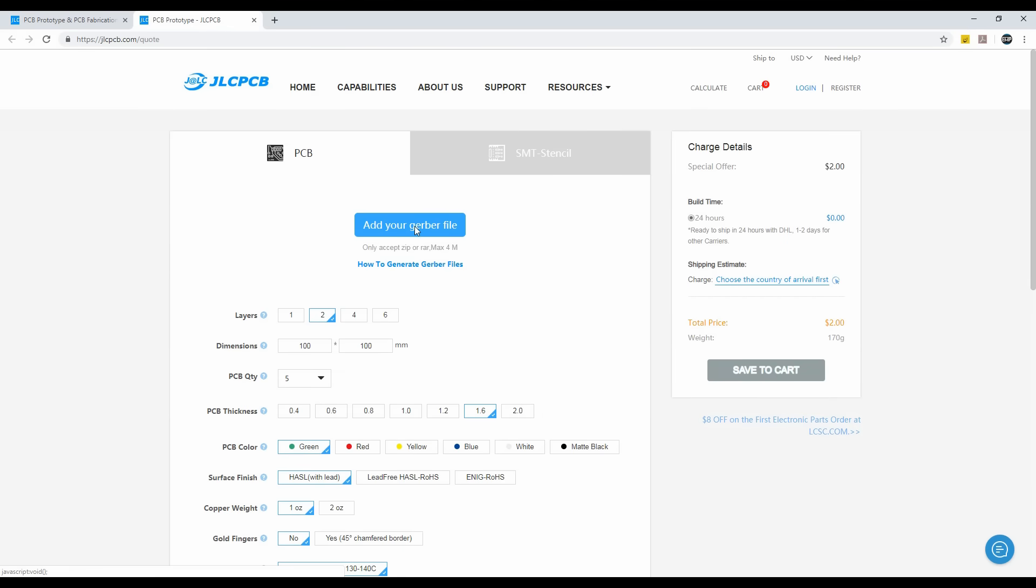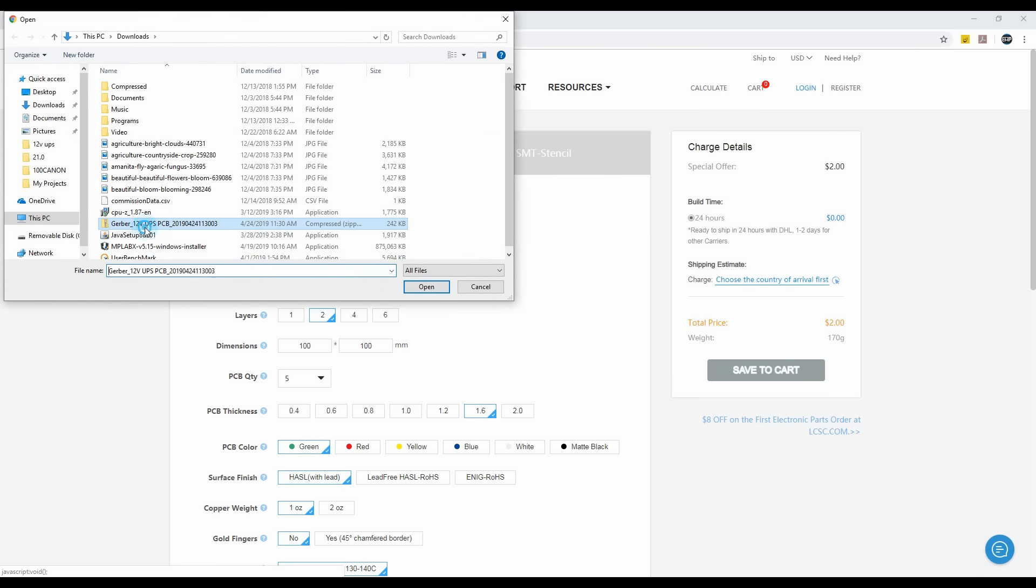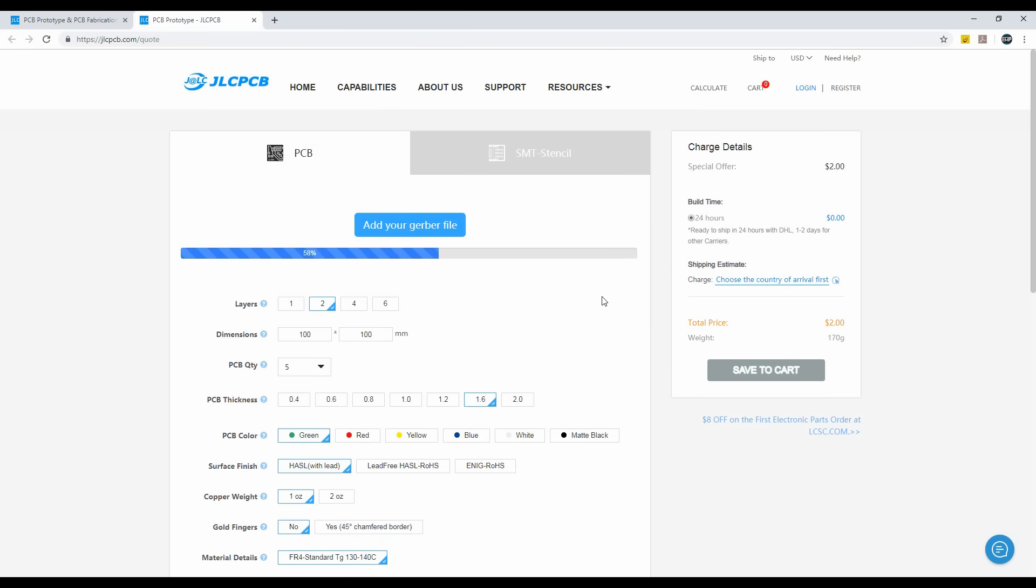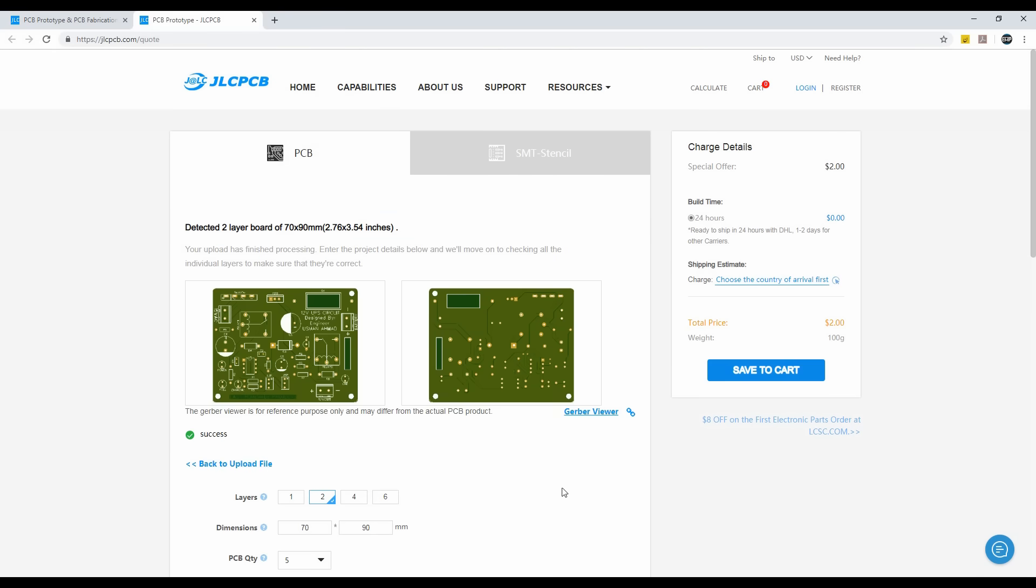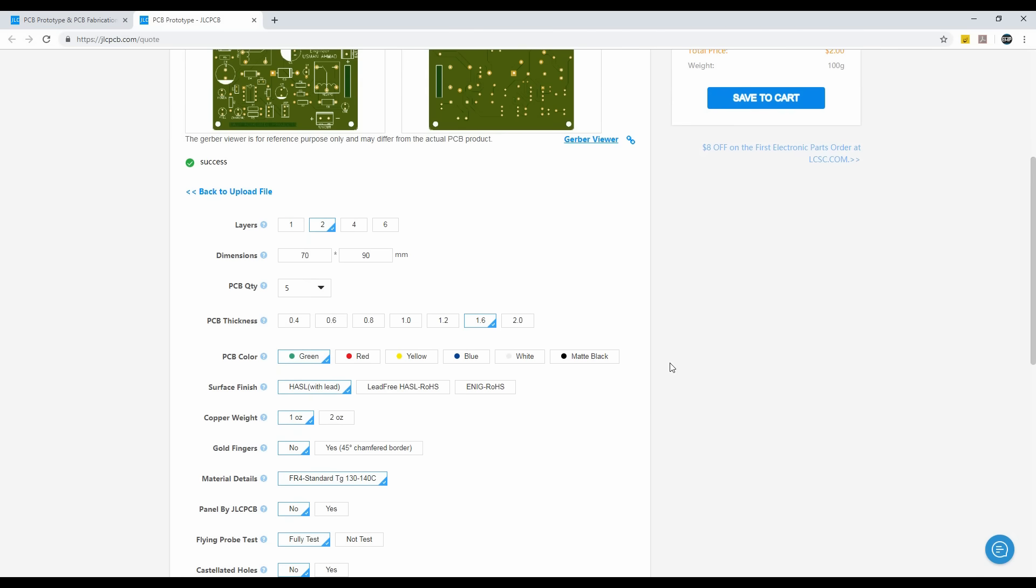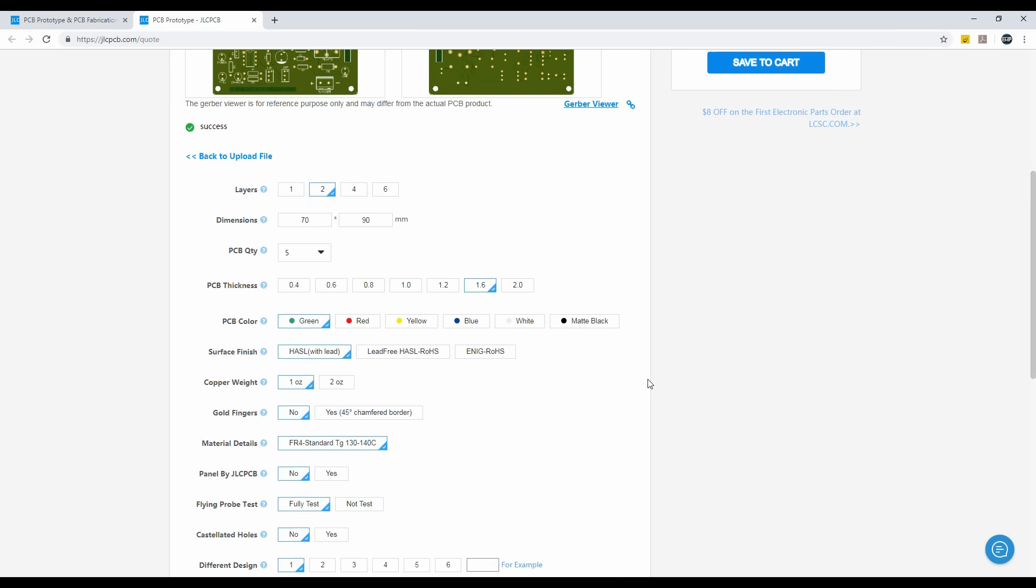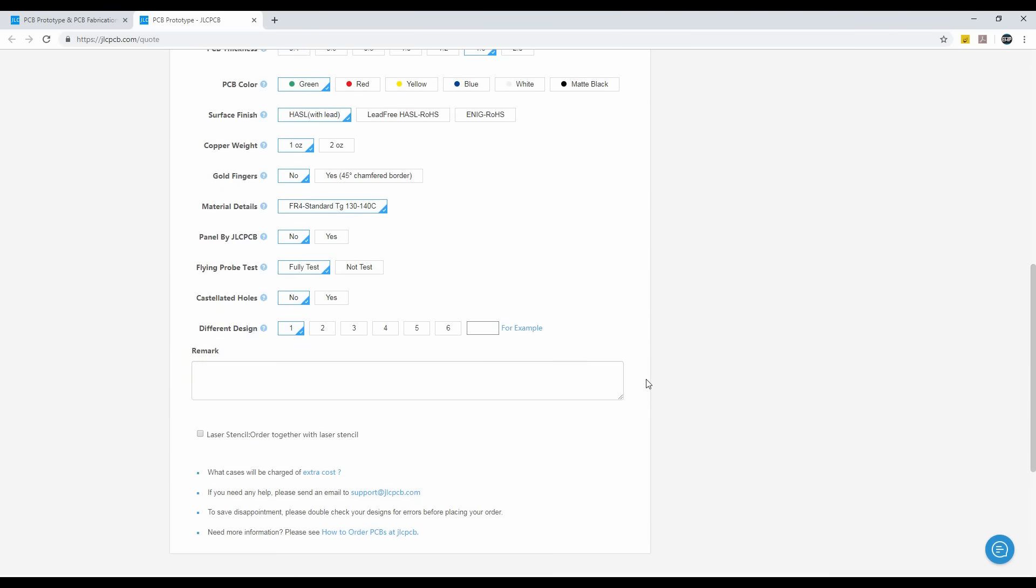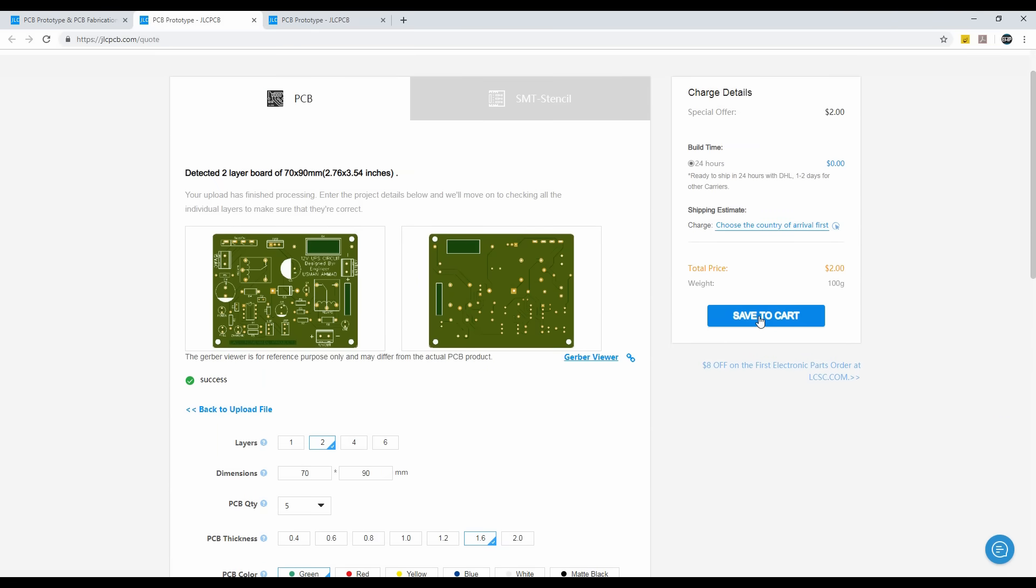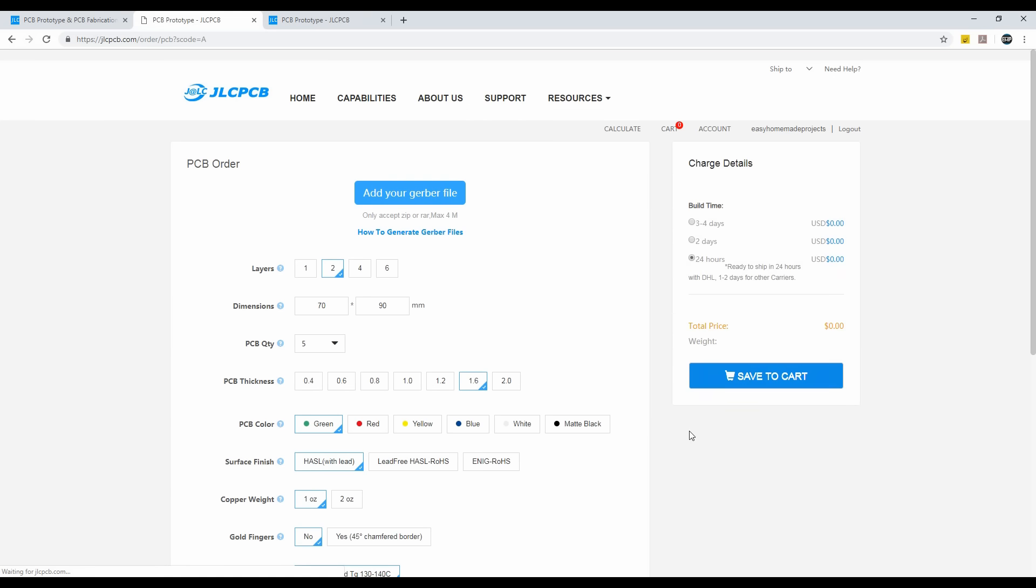Then upload your Gerber files here. After uploading Gerber files, you can change some PCB parameters from here. You can select any color from here for the same price. And now from here, you can order 5 pieces of 10x10cm PCBs in just $2 only and 10 pieces of 10x10cm PCBs in just $5 only.